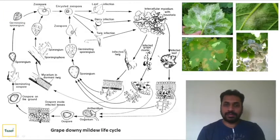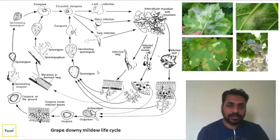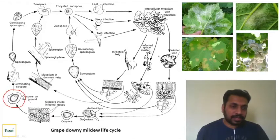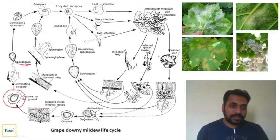Now we can see some examples of life cycles - pathogens that have both sexual and asexual life cycles, and pathogens that have only a sexual stage. Let's look at the life cycle of grape downy mildew. It is caused by Plasmopara viticola. Here you can see the oospore - oospores are the resting spores in grape downy mildew. When favorable conditions come and weather favors, this oospore will germinate and produce a sporangium.